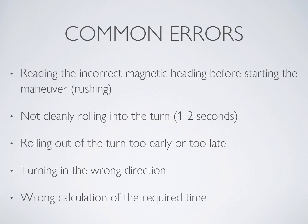Turning in the wrong direction is one of the biggest errors observed. The compass is trying to mislead you — don't trust it. Turn the opposite way from what the compass seems to suggest. Remember: left for less. The last common error is wrong calculation of the required turn time — something you can practice on the ground so that once in the airplane with all the distractions, your calculations remain correct.